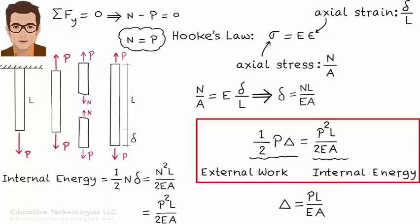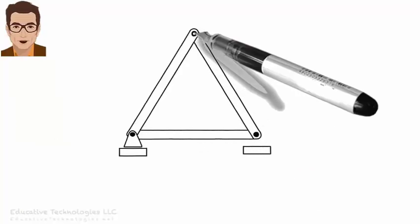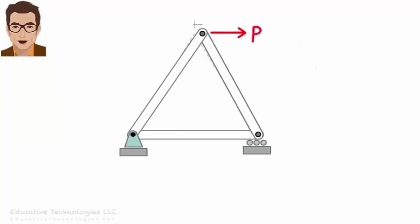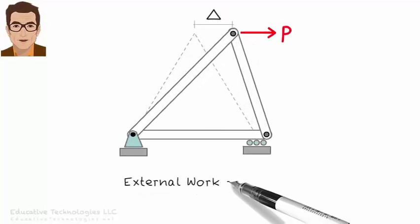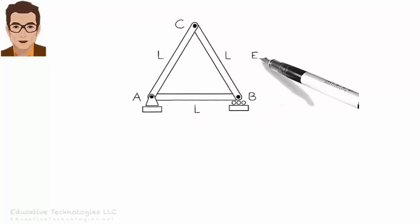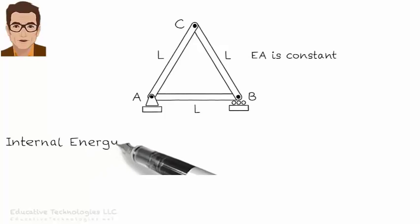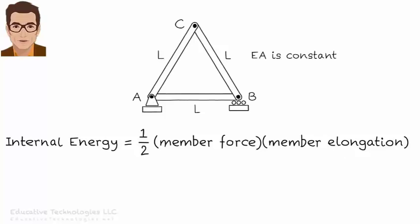How does this principle work if the structure consists of multiple members? Let's look at a less trivial example. Consider this triangular truss structure. Under the applied load, the truss deforms. The total external work equals one half P delta. Let's find delta using the work energy principle. The structure consists of three members. We need to find the internal energy stored in each member. To do so, we need to know the internal force in the member as well as its elongation. Since the truss is determinate, the member forces can be determined using the method of joints.